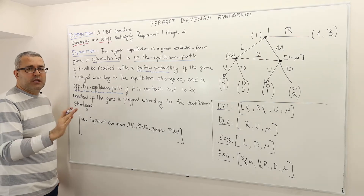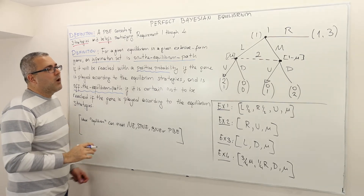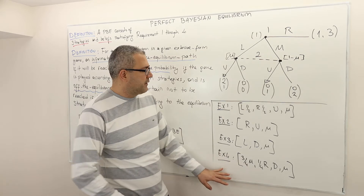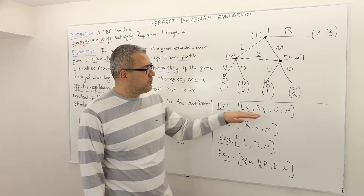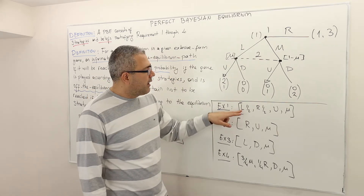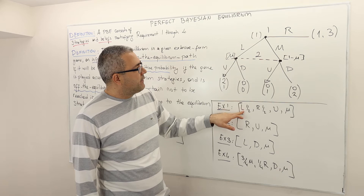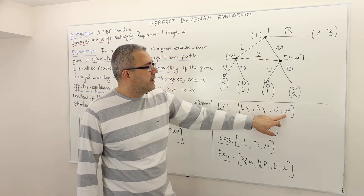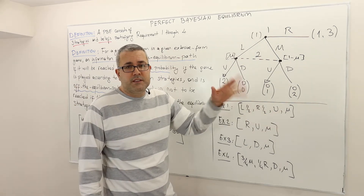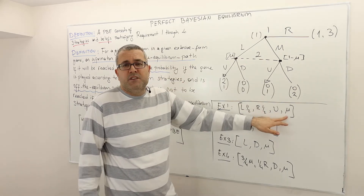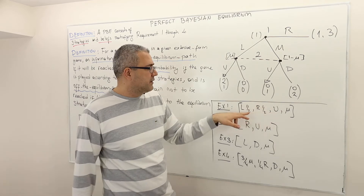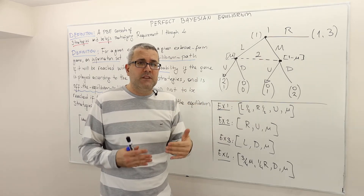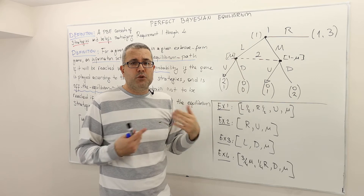I think it's a very straightforward and easy description. For the same example, I have four different examples. Let's suppose — we haven't checked them yet — but let's suppose these are equilibria. Here, player one is going to play left with one-half probability and right with one-half probability, so he's mixing. Player two is going to play U and holds some belief mu. In this description, mu is irrelevant. Player two's action is also irrelevant. What is relevant is player one's move, because player one is the one who determines whether this info set will be reached or not.